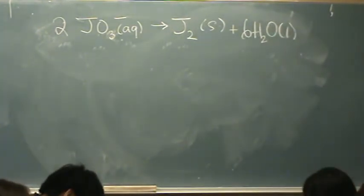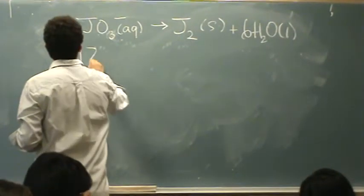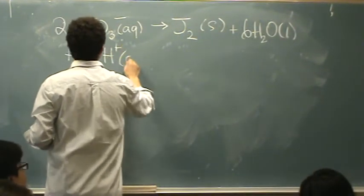Now the third step is balancing hydrogen. There's 12 on the right, so you need 12 on the left, so plus 12H+ aqueous.